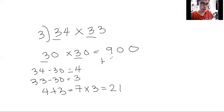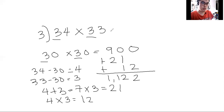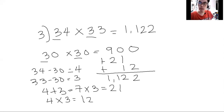We're going to add 21, placing it in the tens digit. Then 4 times 3 for the units digit is 12. We add it with 12, placing it in the units digit. Adding all these numbers, our product is 1,122. Now we're going to move to the example involving 40s.